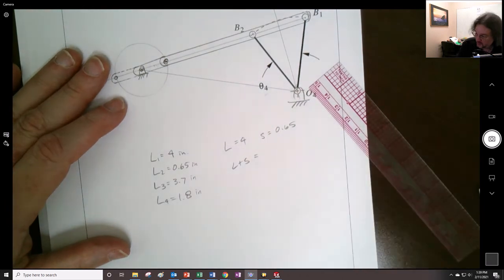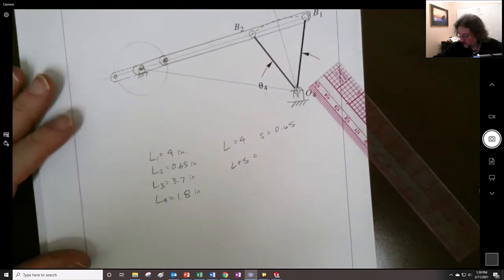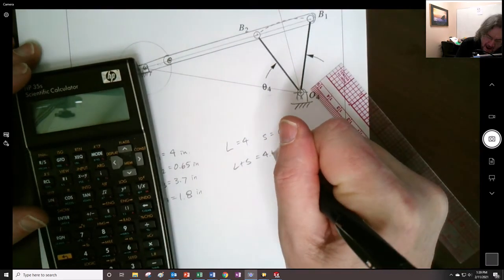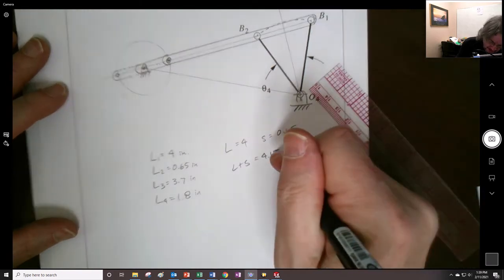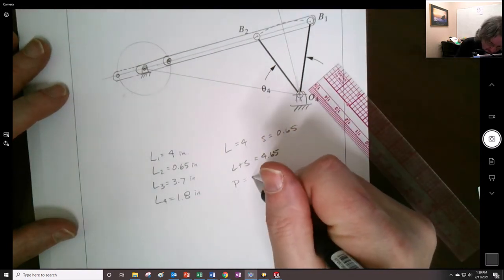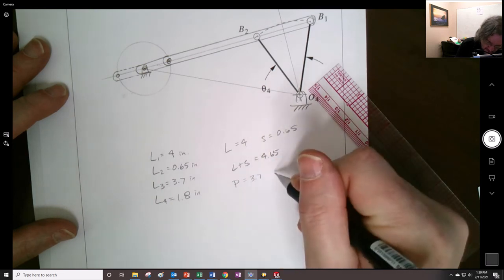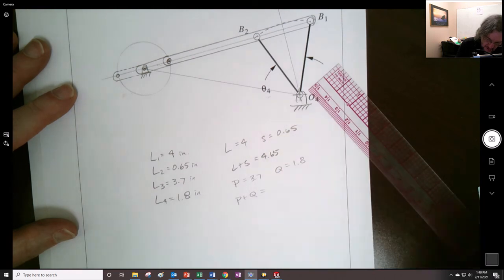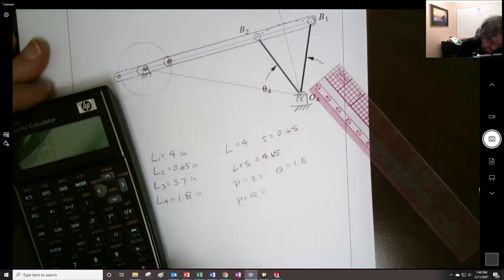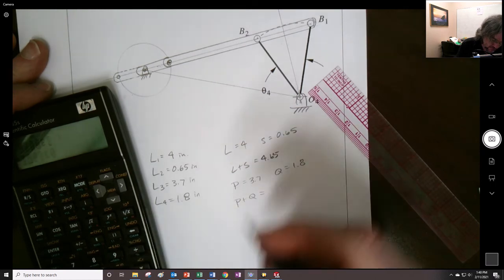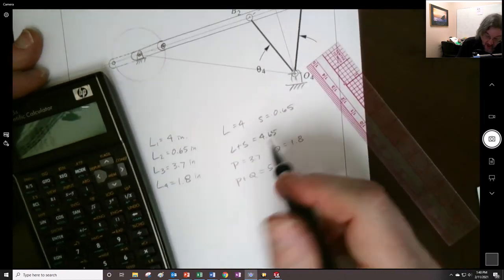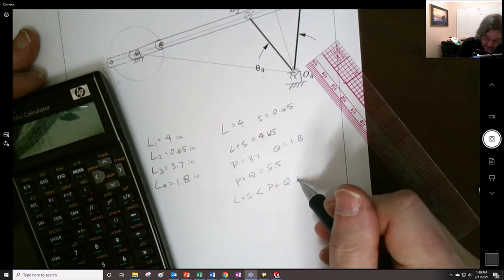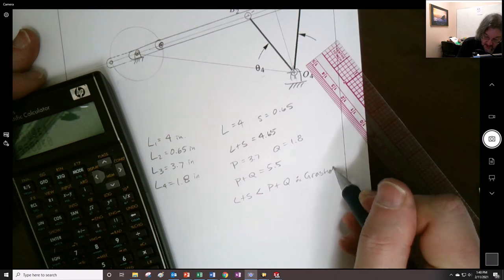So the long one is equal to 4 inches, and the short one is equal to 0.65. So L plus S is in our heads, you should be able to do that in your head, 4.65. And then P is 3.7, and Q is 1.8. So P plus Q, I actually have to use my calculator for that, is that 4.5, looks like 4.5, 5.5. Okay. So since L plus S is less than P plus Q, Grashoff. So this thing could actually be made.